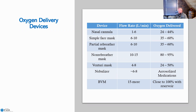The bag valve device runs at 15 liters or more, giving close to 100% oxygenation if it has a reservoir—either an accordion style that extends out or a bag. Make sure that the accordion is extended or the bag is inflated so that you know you have good oxygen in the reservoir. Without a properly inflated reservoir, the patient gets only about 40% to 60% oxygenation—a substantial reduction—which is why we want to make sure the reservoir is set up correctly.